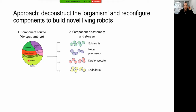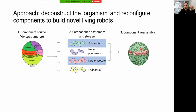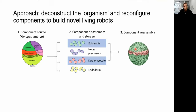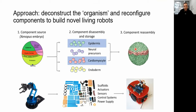One approach is to simply harvest cells from these specific locations, disassemble the components, and then put them back together into a novel configuration. I could take these green cells, which are skin, and these red cells, which are heart muscle, and build something new that is different from what the embryo was. This seems very strange from the point of view of a biologist — taking apart an organism and putting it back together. But if you're a roboticist, this is simple: you take apart one robot, disassemble its components into actuators, scaffolds, and sensors, and build a new robot.